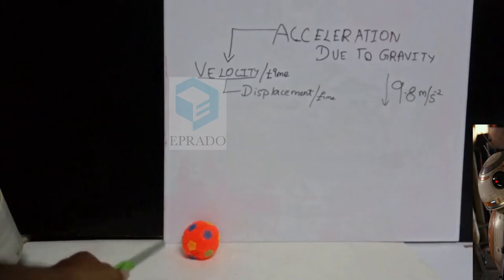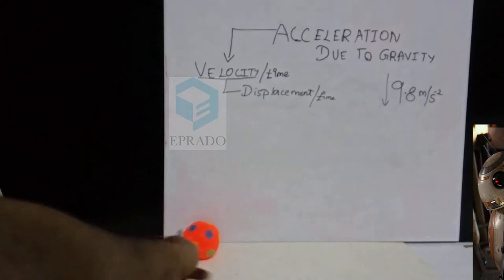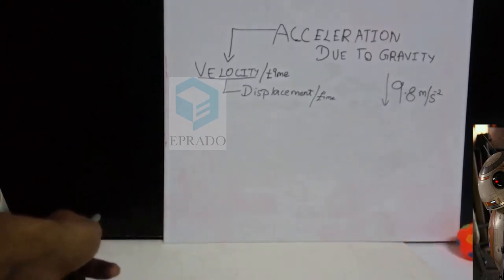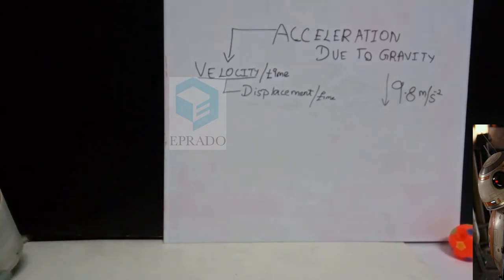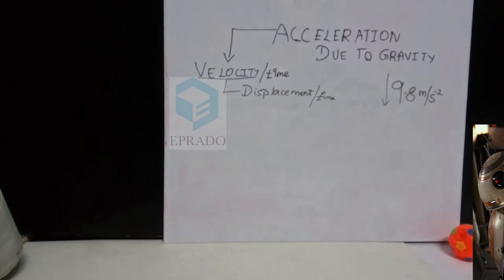Let us consider this ball. If we keep a force on this ball, this ball will move forward and stop at a point. Why does this happen? Because the gravitational pull of earth is attracting this ball towards the ground, and the air around this ball tries to stop it. The friction of the flow also reduces the force applied on the ball and stops the movement of the ball.